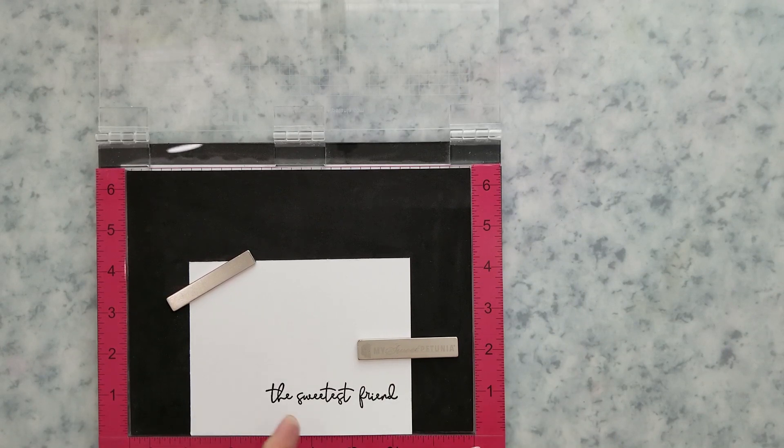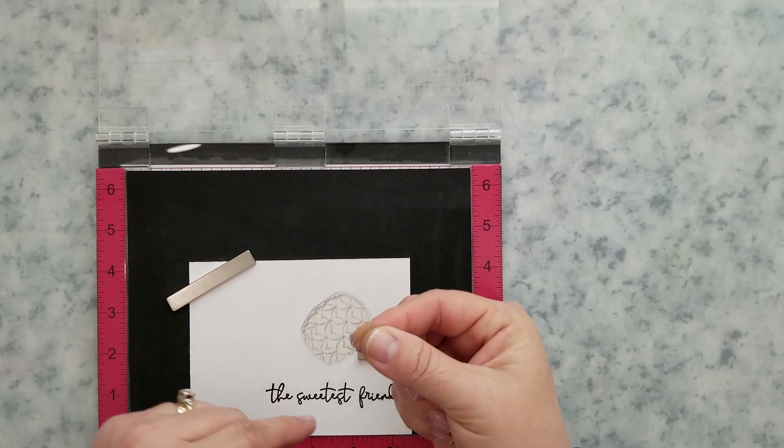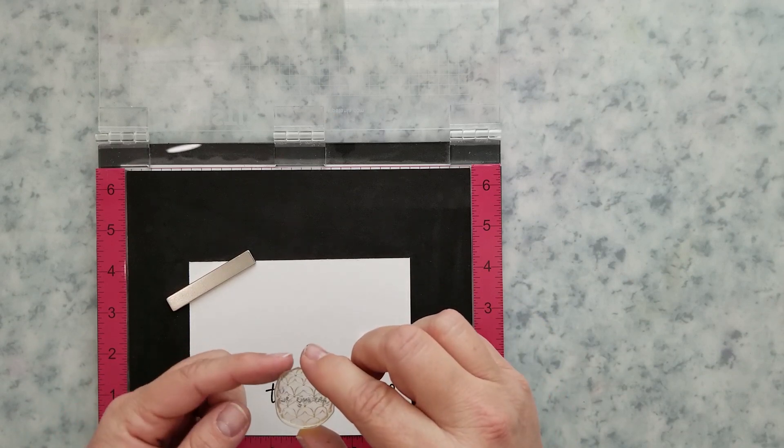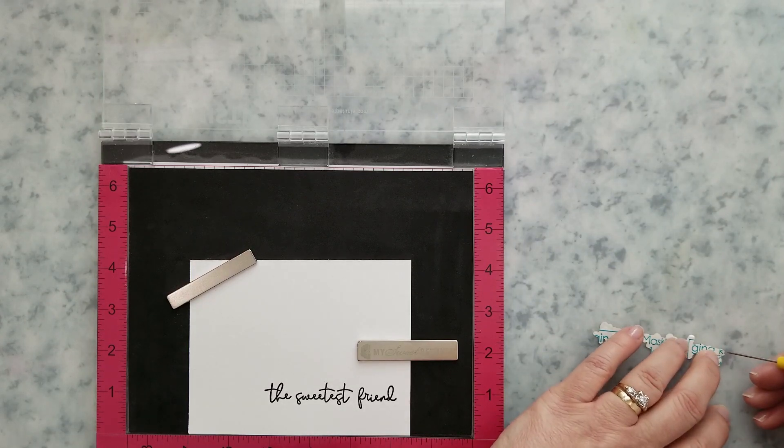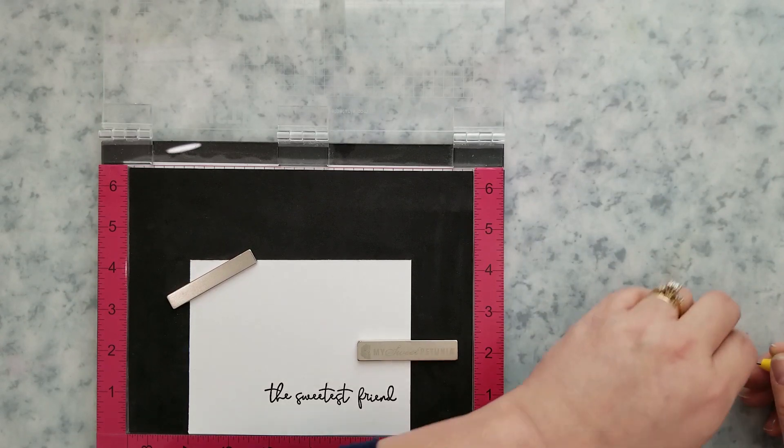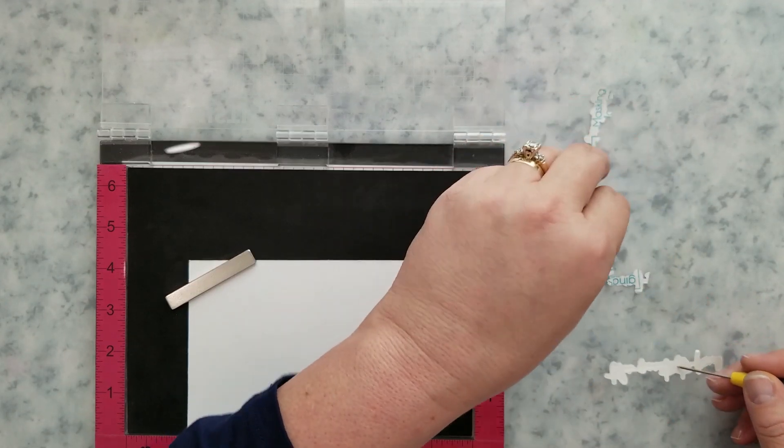And of course use a preheated heat tool. So now that we have the sentiments ready, we're going to lay our panels into the MISTI and center those up. We're going to go ahead and center our pineapple up on that card panel and lift it with the lid of the MISTI.